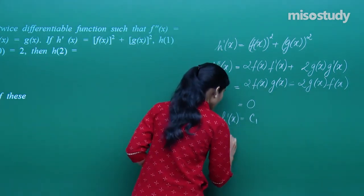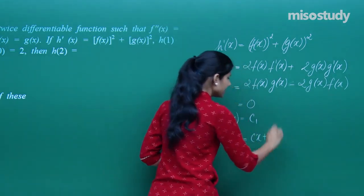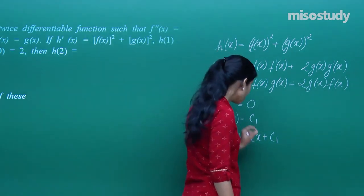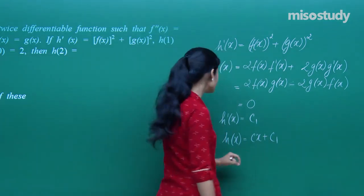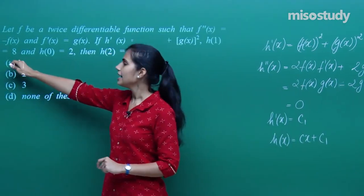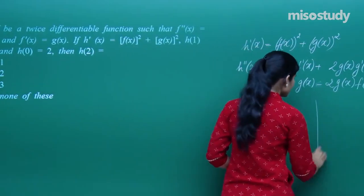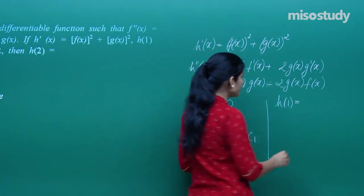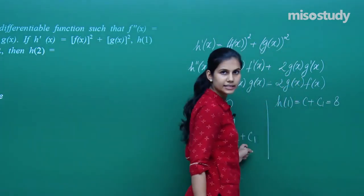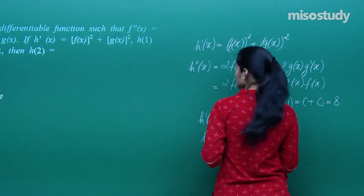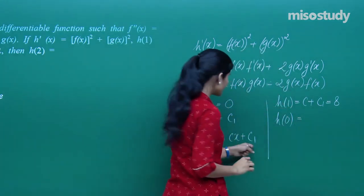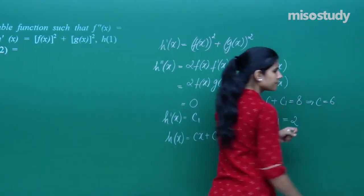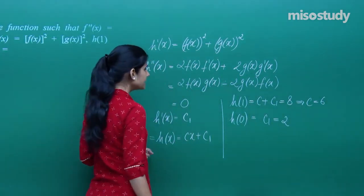If h'(x) is constant, then h(x) = c·x + c₁. Using the given conditions: h(1) = c + c₁ = 8, and h(0) = c₁ = 2. So c₁ = 2, and therefore c = 6.